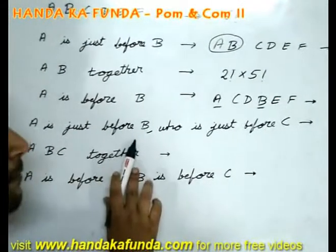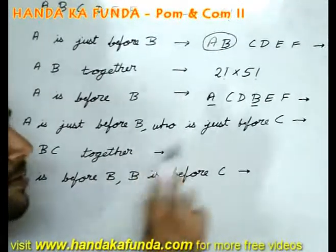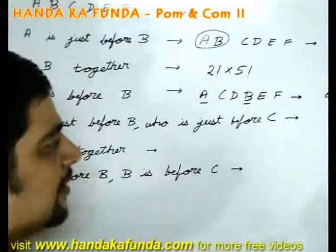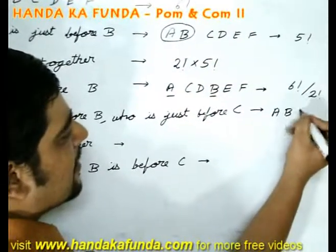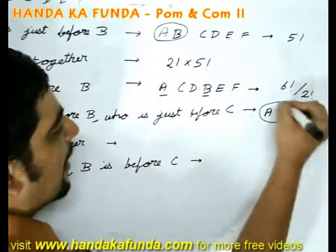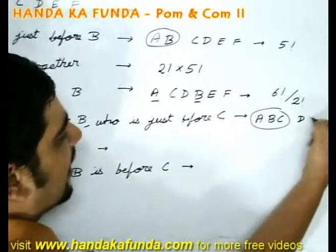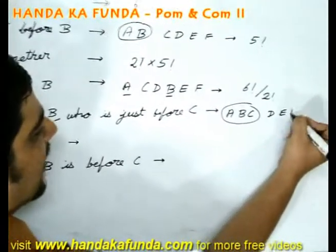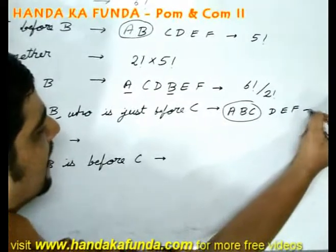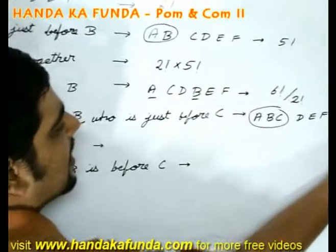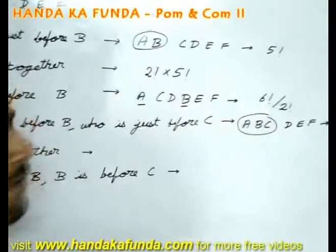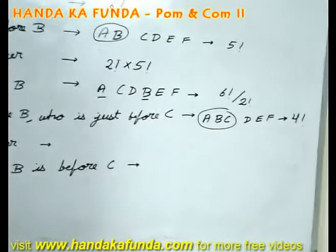Suppose A is just before B who is just before C. Now you will consider A, B, C as one entity and you have 3 more entities D, E, F. So they can be arranged in 4 factorial ways.